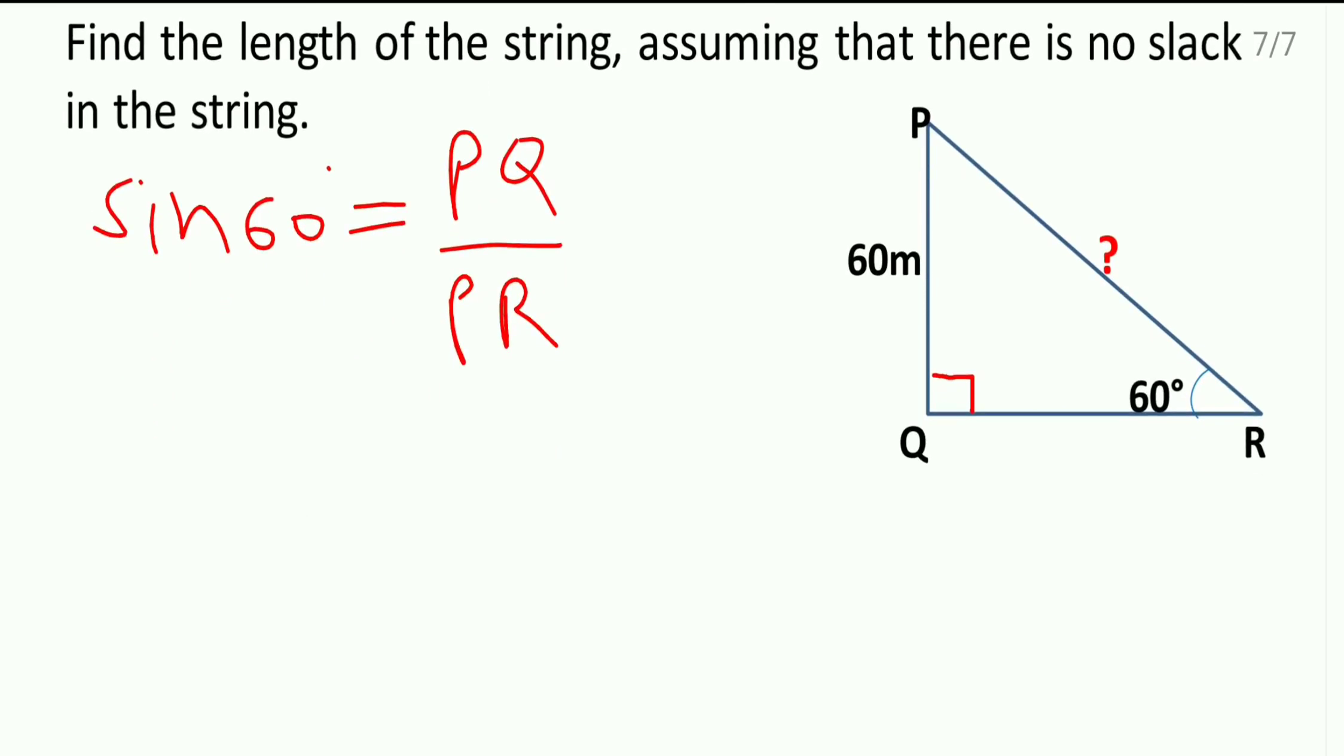Sine 60 means root 3 by 2. PQ is 60. PR we don't know. We will do the cross multiplication. Root 3 into PR which is equal to 60 into 2.